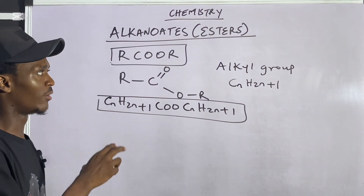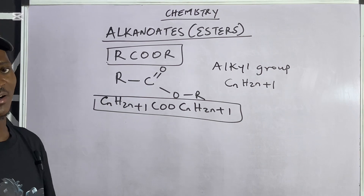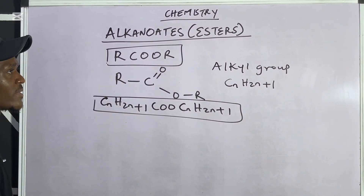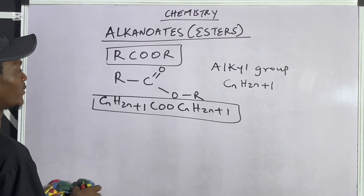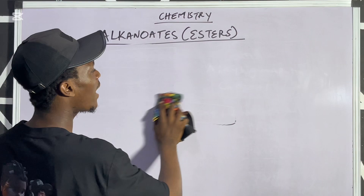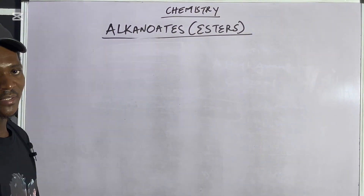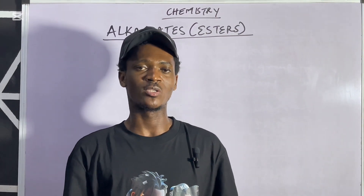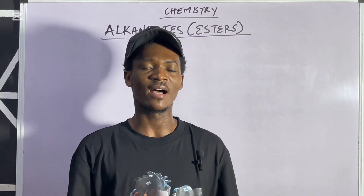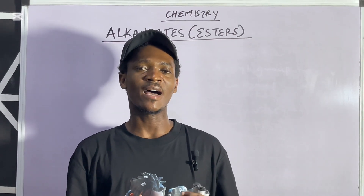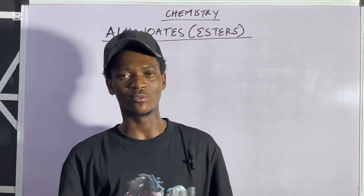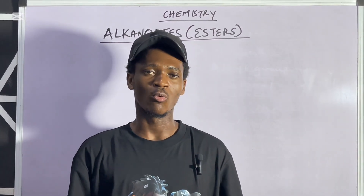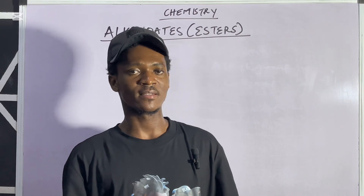That's one characteristic feature of the esters or alkanoids. Now the next thing we have to look at briefly is how we can obtain the esters or alkanoids in the lab. The esters are prepared in the lab by a chemical reaction between an alkanoic acid and an alkanol. When you react an alkanoic acid and an alkanol in a reversible reaction, you obtain an ester along with water.